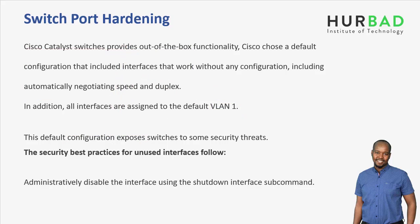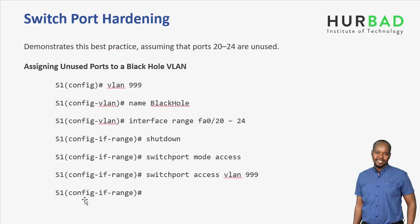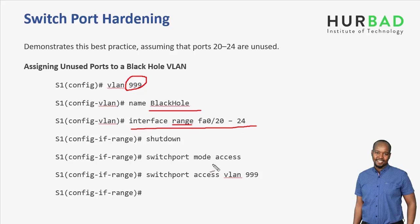When you are using the configuration of VLAN, you can see VLAN 999. You can see VLAN 999 as a black hole VLAN. When you are using the virtual interface, you can see the access port and the trunking port.